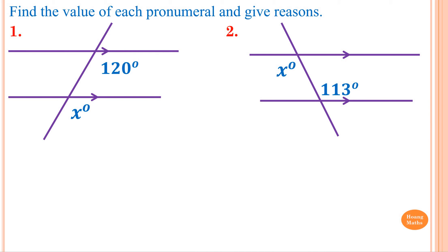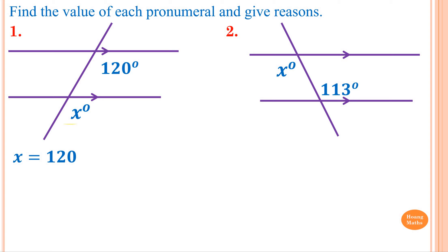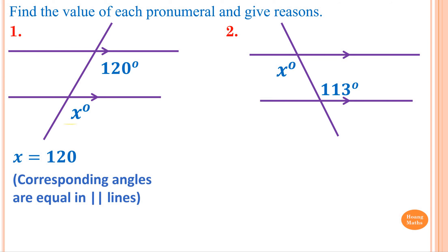Find the value of X. Please stop the video and try it yourself, or work with me. Question one — it's like the letter F here, so this angle and this angle are corresponding angles. They are equal because both lines are parallel. Therefore X equals 120. The reason is: corresponding angles are equal in parallel lines.